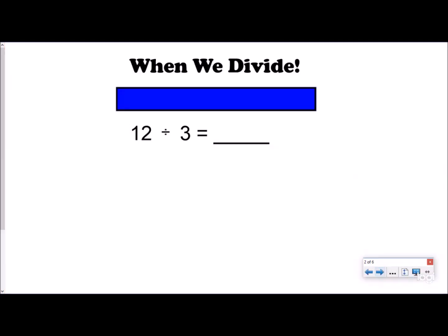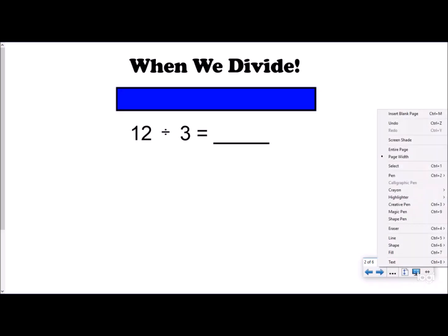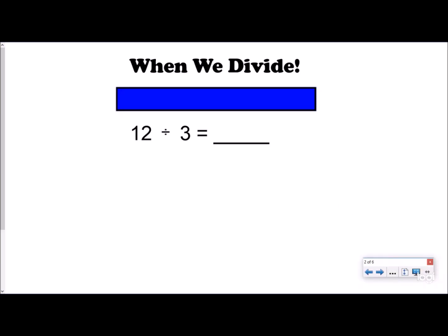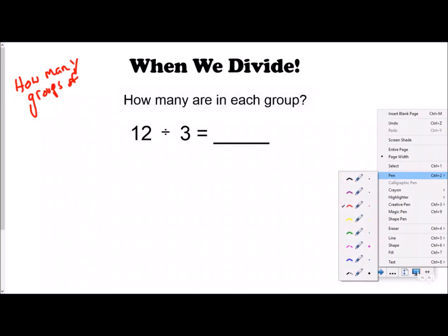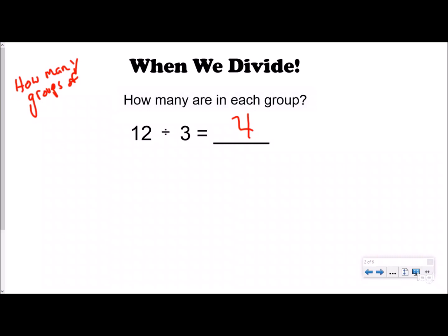When we divide, there are two questions you can be answering. The last video talked about how many groups of three fit into 12. But the other question you could also be answering when you divide is how many are in each group. So when you're dividing 12 divided by 3, your answer is 4. Sometimes in a word problem they might give you three groups and you're figuring out how many are in each group — split 12 into three groups, there'd be four in each group. Today it's going to help us to think about division as how many are in each group.